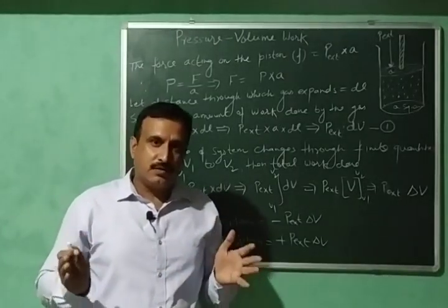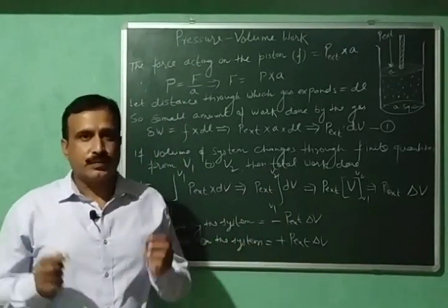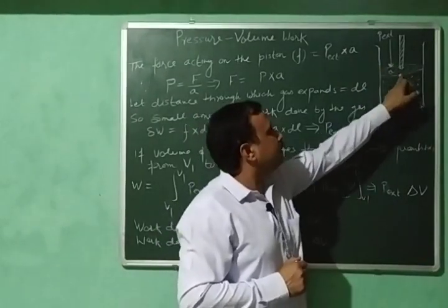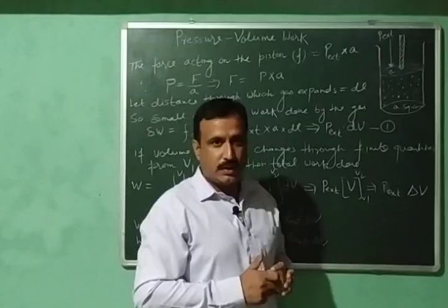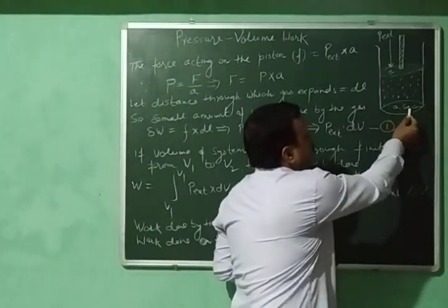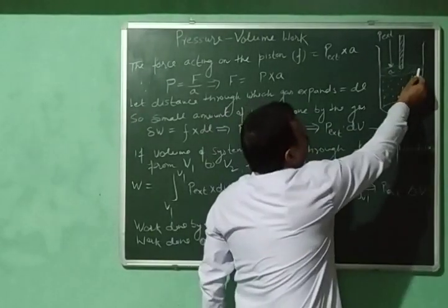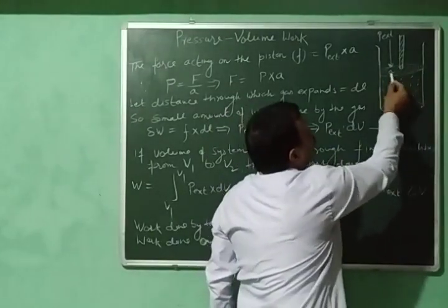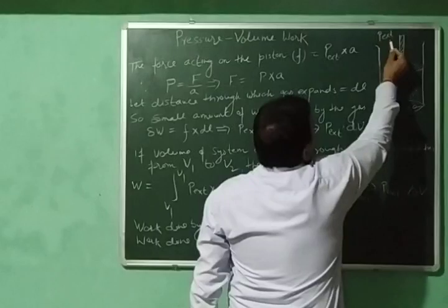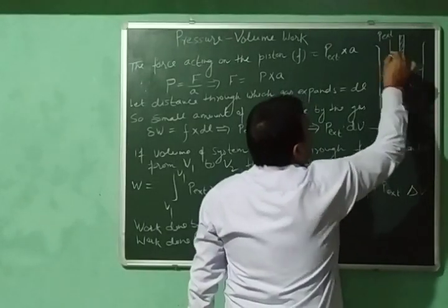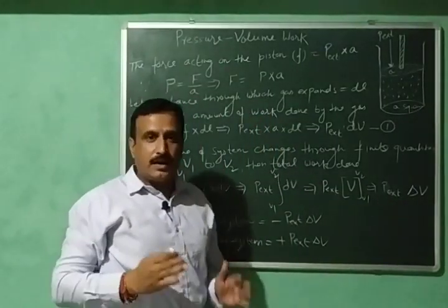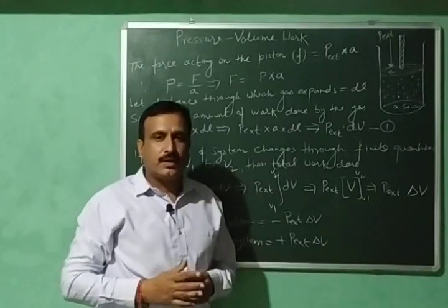To derive an expression for this type of work done, let us consider a gas enclosed inside a cylinder fitted with a weightless, frictionless piston. The area of the cross section of the cylinder is A square centimeters, so the area of the cross section of the piston will also be A square centimeters. P external is the pressure acting upon the piston from outside — the external pressure against which the gas will expand.